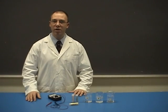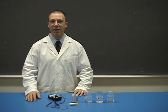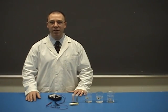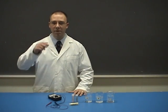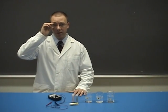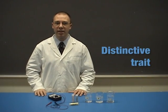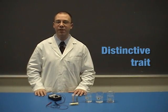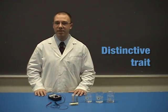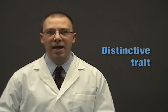Liquids such as water, vinegar, and dish soap are commonly found in the average household. In order to identify these and other liquids, scientists rely on their characteristic properties. A characteristic property is a distinctive trait that can be observed and helps identify a substance. The objective of this lab is to identify the characteristic properties of liquids.